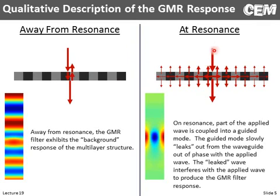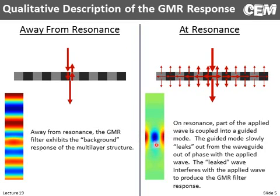On the resonance, the wave comes in, couples into a guided mode, and as that guided mode propagates it slowly leaks out of the guide. The leaked wave and the original applied wave interfere and produce the overall frequency response. If I were to plot the field on resonance, this is what it would look like — it looks very much like a guided mode. Just due to the color scaling, because the field here is enhanced 20 to 40 times, we don't see the applied wave, but it is there.